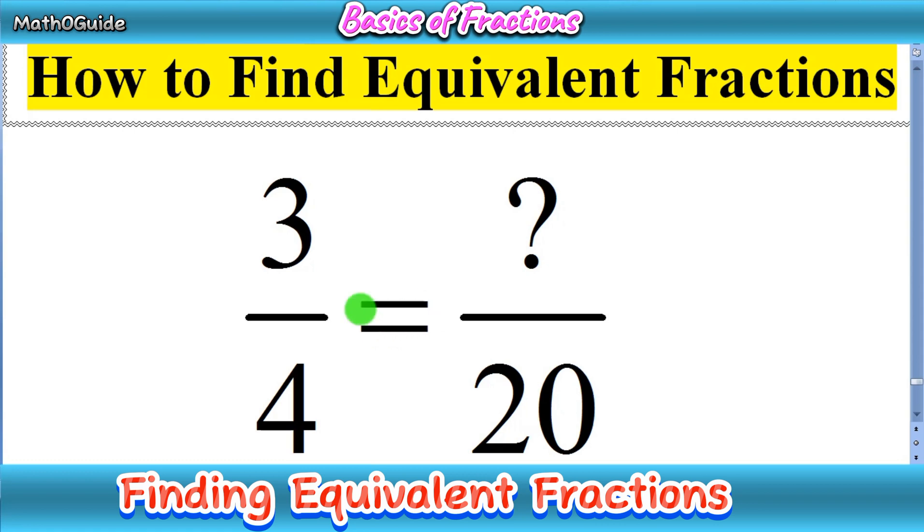We have 3 over 4 equals question mark over 20. So here we have to find the missing number.